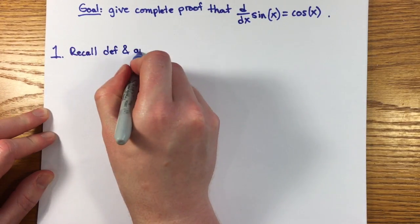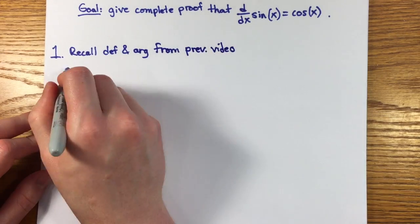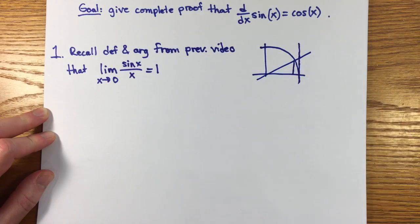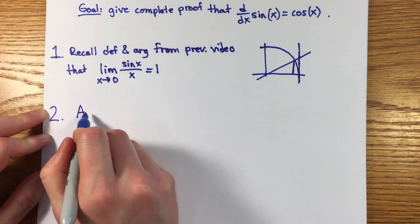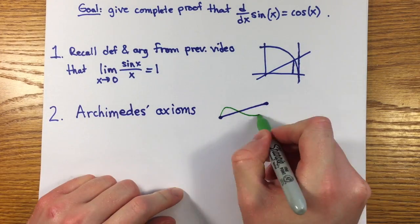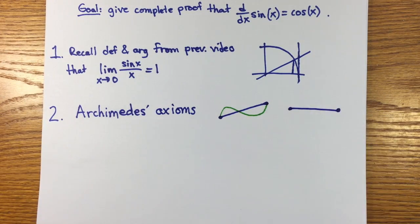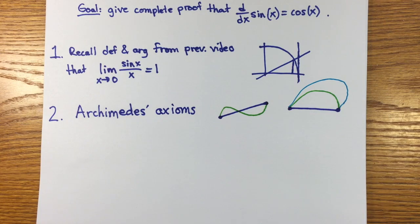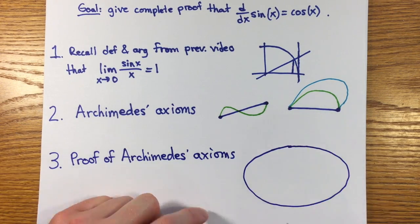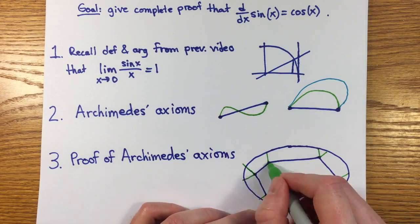First, I'll quickly recall the argument from last time and the key inequalities that the proof depended on. Then I'll show how Archimedes proved these inequalities over 2200 years ago by introducing two new axioms about lengths of curves, and then I'll take a more modern viewpoint and prove Archimedes' axioms. This will give a satisfying resolution to finding the derivatives of trig functions starting from their most natural definition.